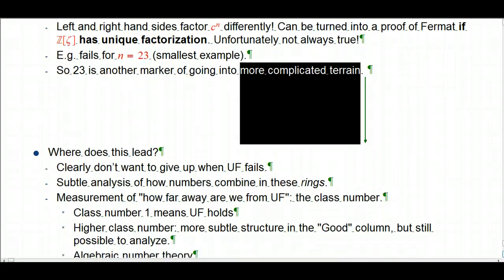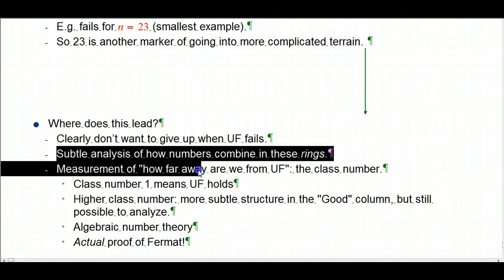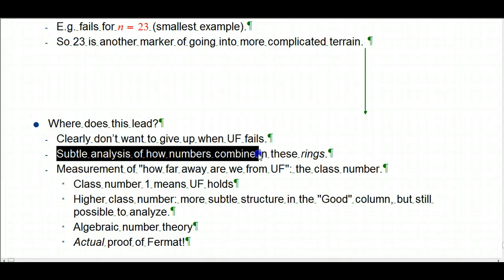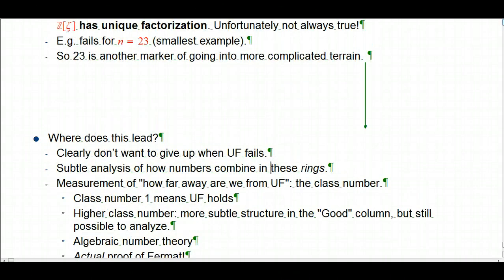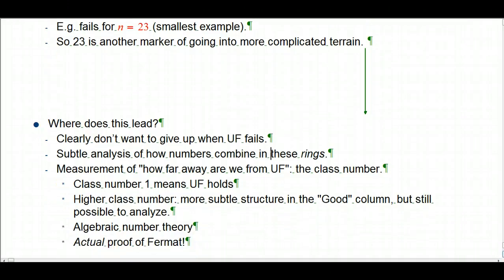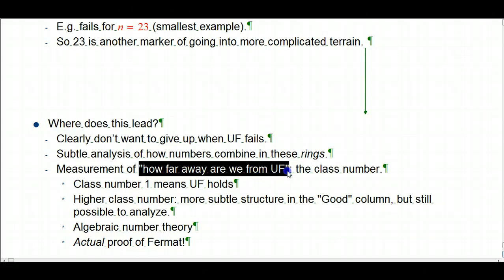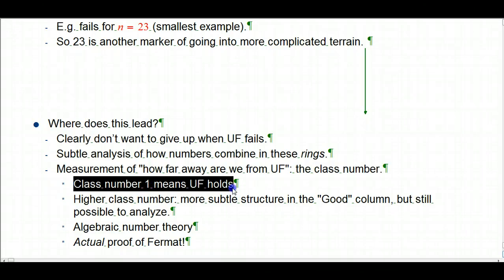So, where does this lead? Just to finish up. We don't want to give up at this point and just say, the only way we know how to do any kind of mathematics is when unique factorization is true. You want to know what happens after it fails. There's a lot of subtle analysis of how numbers can combine and factor in these situations. And I've said this word before. I've been trying almost painfully to avoid the terminology that these algebraic structures we're talking about, where you can do addition and multiplication in the same way you can do in the integers. These are called rings. And so Z adjoined zeta is an example of a ring, and the Gaussian integers is an example of a ring. And there's a lot to be said about these things. There is, in fact, a specific measurement, which you could say, how far away are we from having unique factorization? And it's a number, it's an integer. It's called the class number.